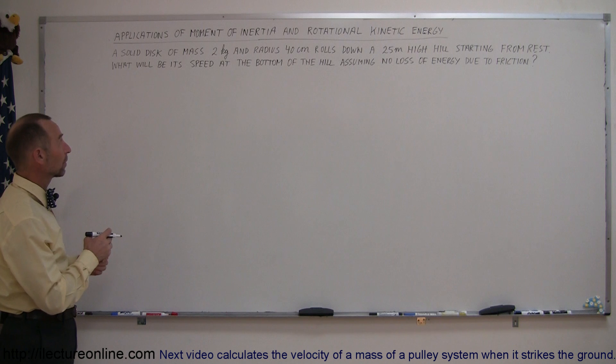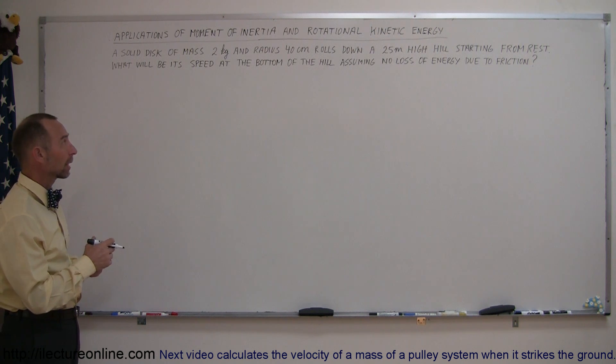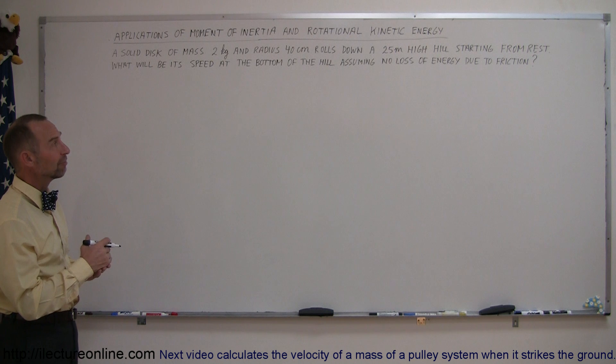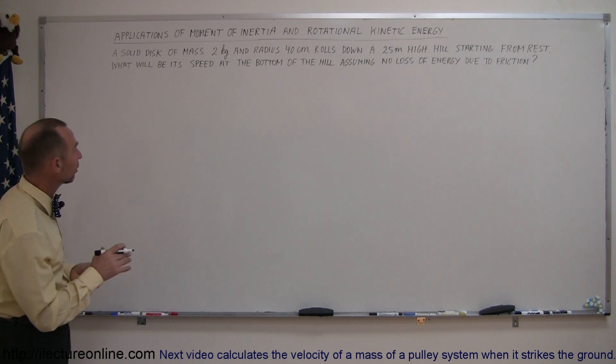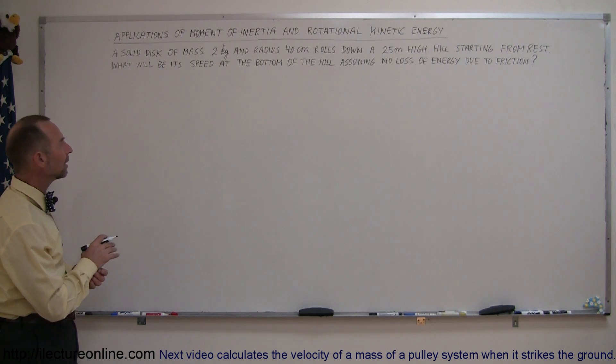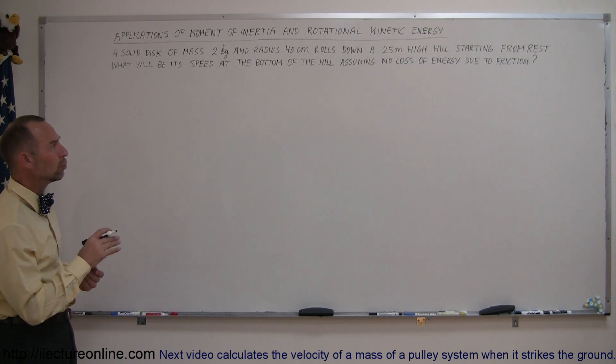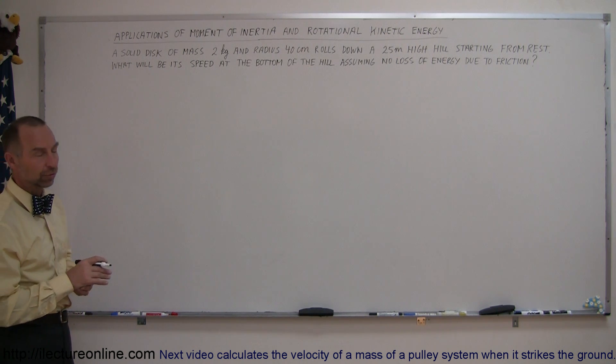Let's say we have a solid disk with a mass of 2 kilograms and a radius of 40 centimeters that rolls down a 25 meter high hill starting from rest. What will be the speed at the bottom of the hill assuming no loss of energy due to friction?